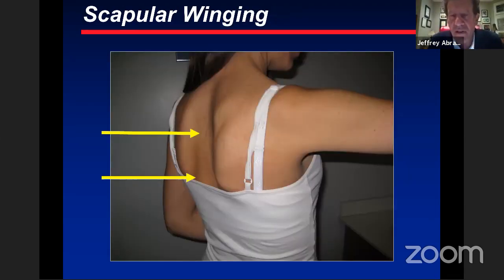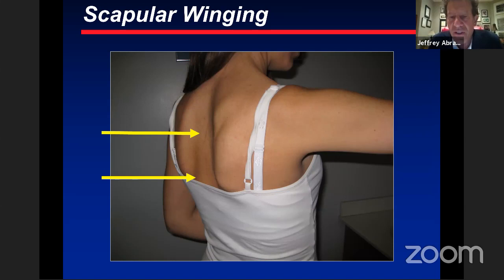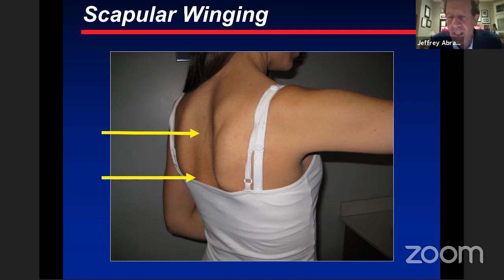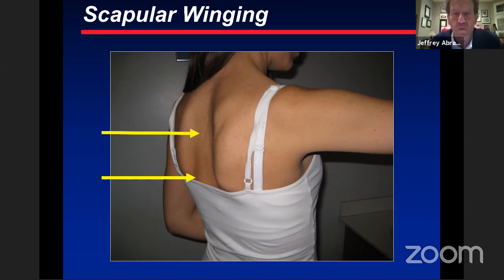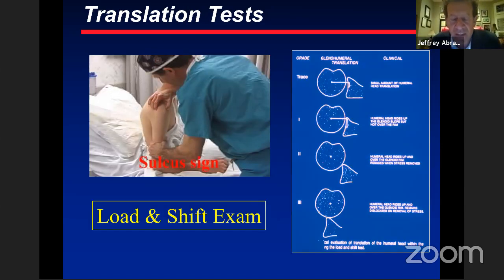Multidirectional instability is more than just an anatomic problem — it's a physiologic problem. The scapula tries to keep the humeral head in its center. Many patients get scapular dyskinesis where the scapula moves in a way that not only does not center the humeral head but can lead to posterior subluxation. If you stood behind this patient and pressed on their scapula, you'd realize they cannot really translate their humeral head out the back. This is not voluntary, but it is demonstrable, and you need to connect the patient to a good physical therapist.